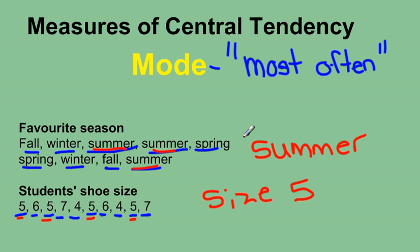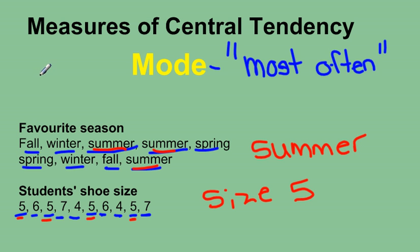And there you have it — the three measures of central tendency: mean, median, and mode. Mean was the average, where we add them all up and divide by the number of values. Median was the middle number, always remembering to order them from smallest to largest first. And mode was the number or value that occurs most often. If you have any questions, please leave them in the comments below. Thank you.